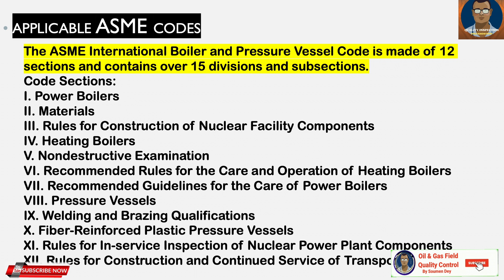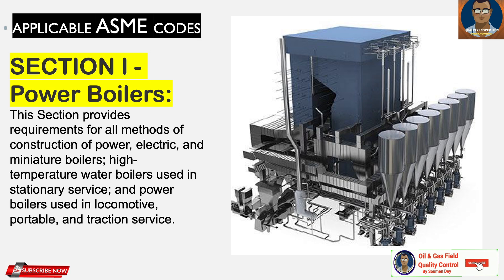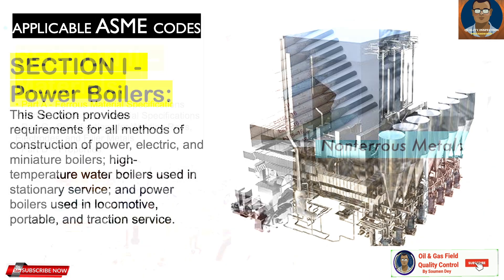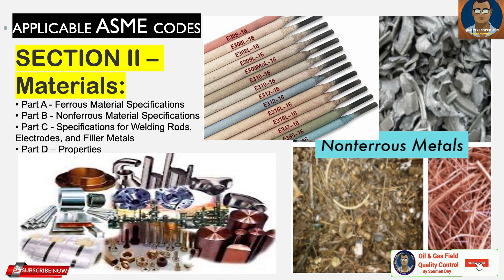Section 1 is for Power Boilers. This section provides requirements for all methods of construction of power, electric, and miniature boilers; high temperature water boilers used in stationary service; and power boilers used in locomotive, portable, and traction service.